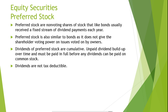Preferred stock also differs from debt instruments because dividends are not tax-deductible in the way that interest payments on debt are. This disadvantage is offset by the Dividend Exclusion Rule, where domestic corporations are allowed to exclude 70% of dividend income received from other domestic corporations from their taxable income. This makes preferred stock an attractive form of fixed income for many US corporations.